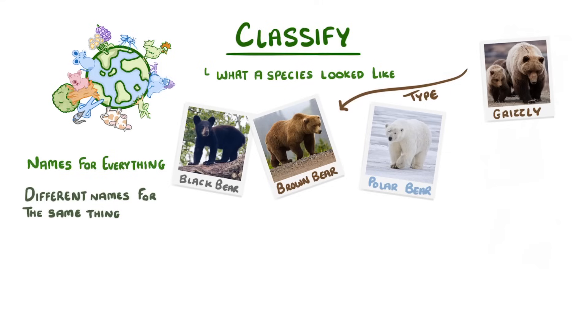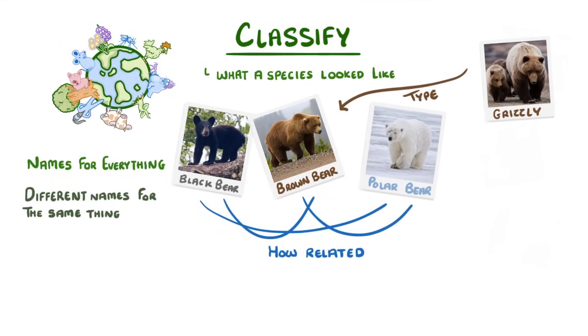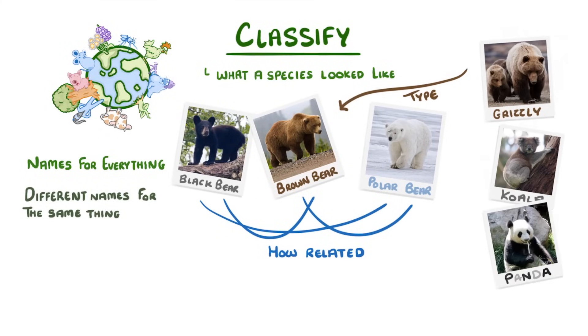The other problem is that simple names don't tell us much about how related the different species are. For example, grizzly bears, koala bears, and panda bears aren't really related at all.